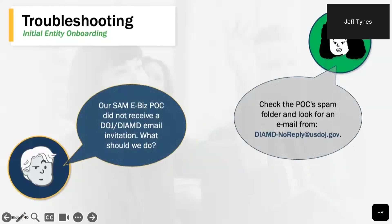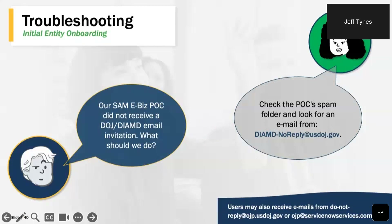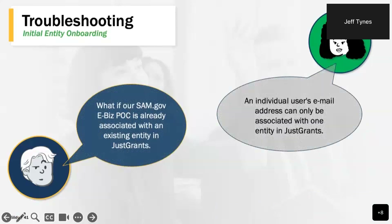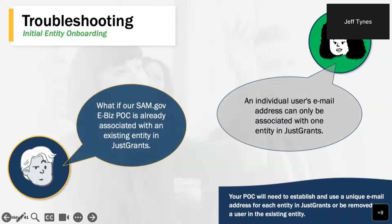If the SAM.gov eBiz point of contact does not find their JustGrants registration email, first check that point of contact's spam or junk folder and look for an email from diamond-noreply@usdoj.gov. Users may also receive emails from do-not-reply@ojp.usdoj.gov or ojp@servicenowservices.com. Another common question: what if the SAM.gov eBiz point of contact is already associated with another entity in JustGrants under a different UEI? If that POC is associated with an existing entity, they'll need to establish a unique email address for each entity in JustGrants, or be removed as a user from the existing entity. An individual user's email address can only be associated with a single UEI in JustGrants.